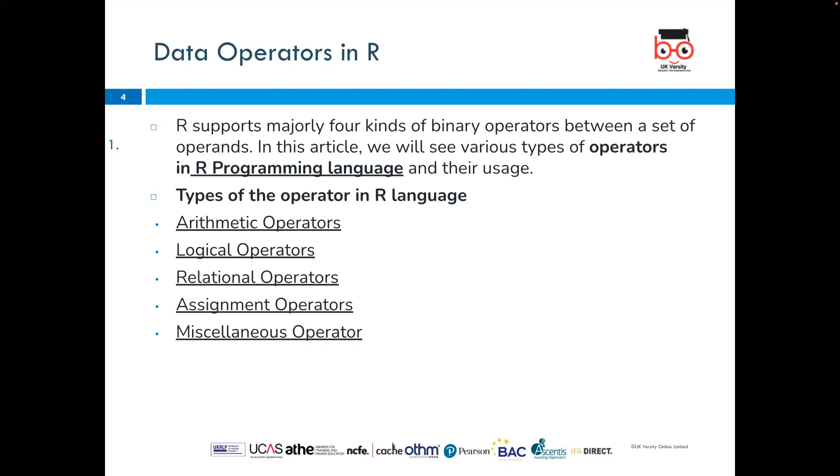Yesterday we spoke about R, so today we'll be looking at data operators in R. Data operators in R include majorly four kinds of binary operators between a set of operands. In this article we will see various types of operators in R programming language and their usage. The types of operators in R language includes arithmetic operators, logical operators, relational operators, assignment operators, and miscellaneous operators.